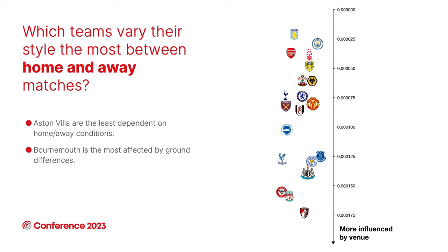The second question is which teams vary their style most between home and away matches. We computed the average pass latent vector for home passes, the average for away passes, and took the difference. Most stable is at the top, least stable at the bottom — bottom teams alter their passing behavior more based on venue. Aston Villa are the least dependent on home/away conditions, whereas Bournemouth tends to be more affected by whether they're playing home or away.